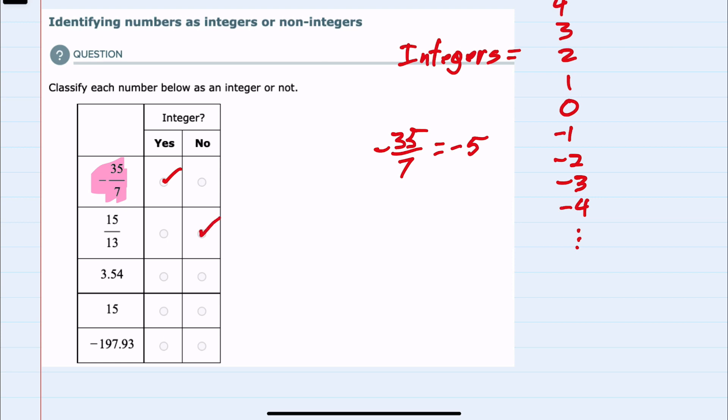The decimal 3.54 will also not simplify to an integer. The number 15 is one of those counting numbers — it's neither a fraction nor a decimal — so that is an integer. The last example has a decimal, so that is also not an integer.